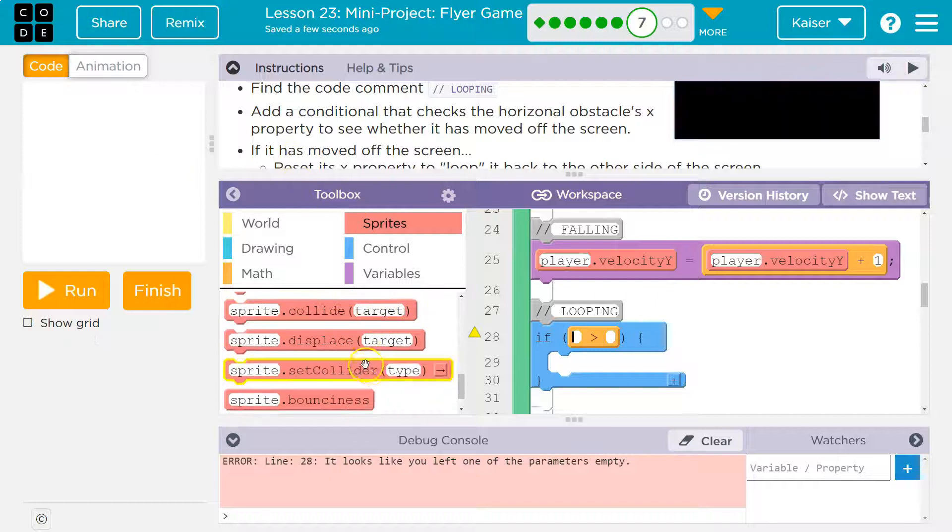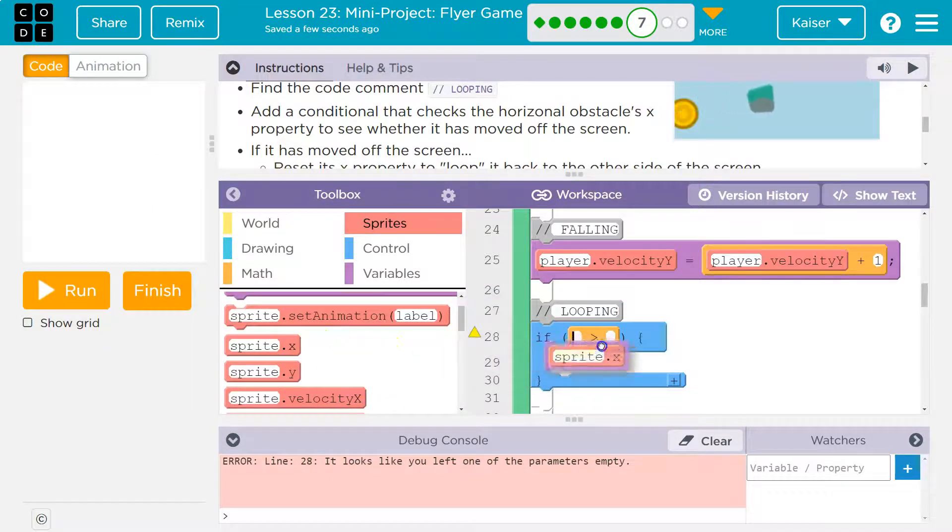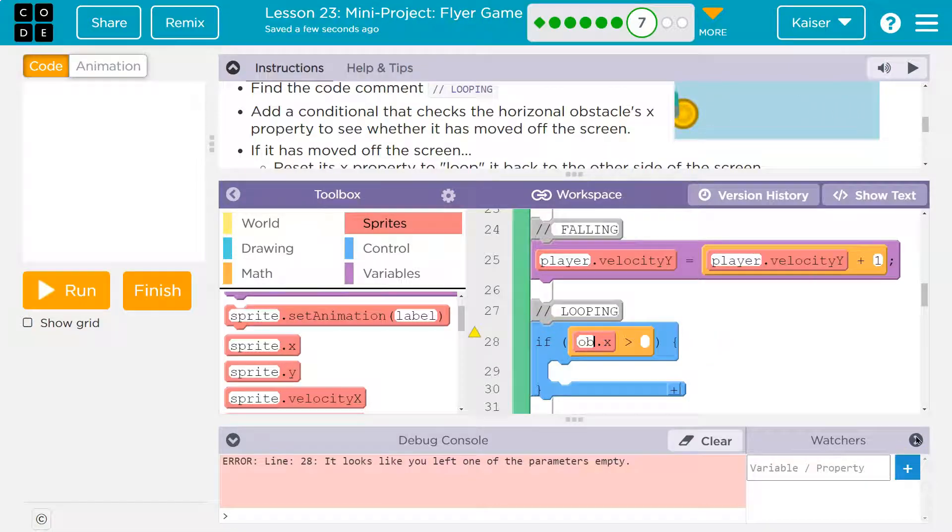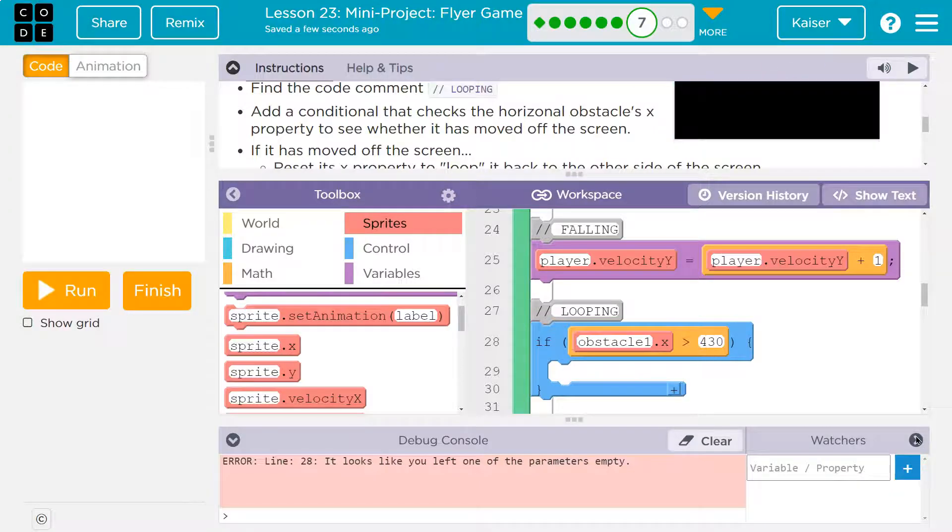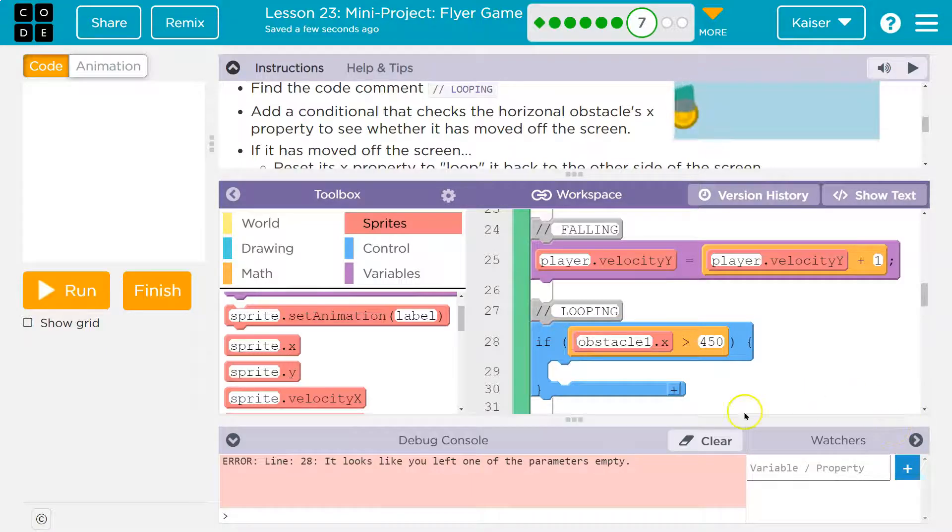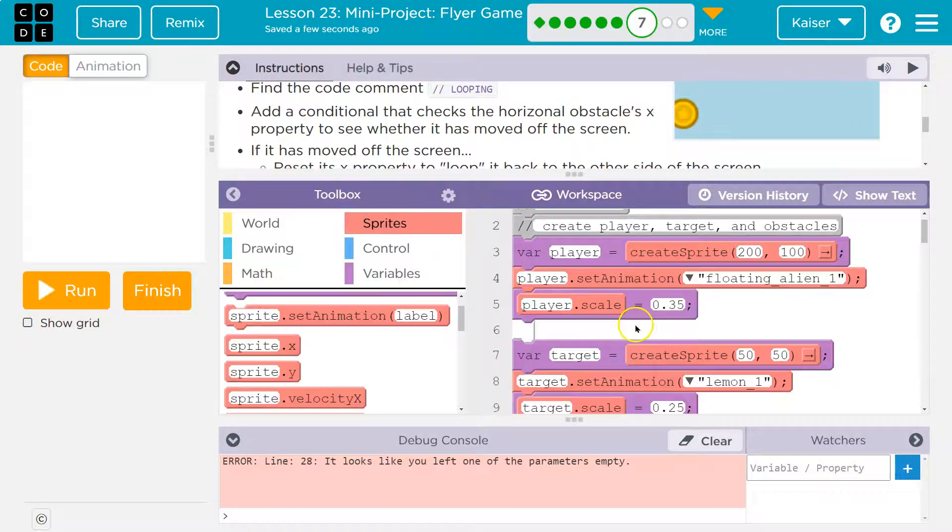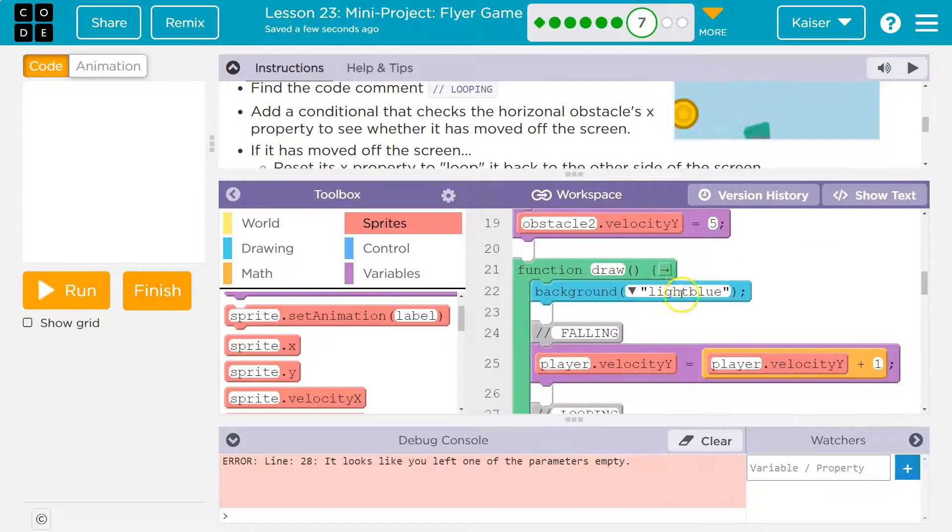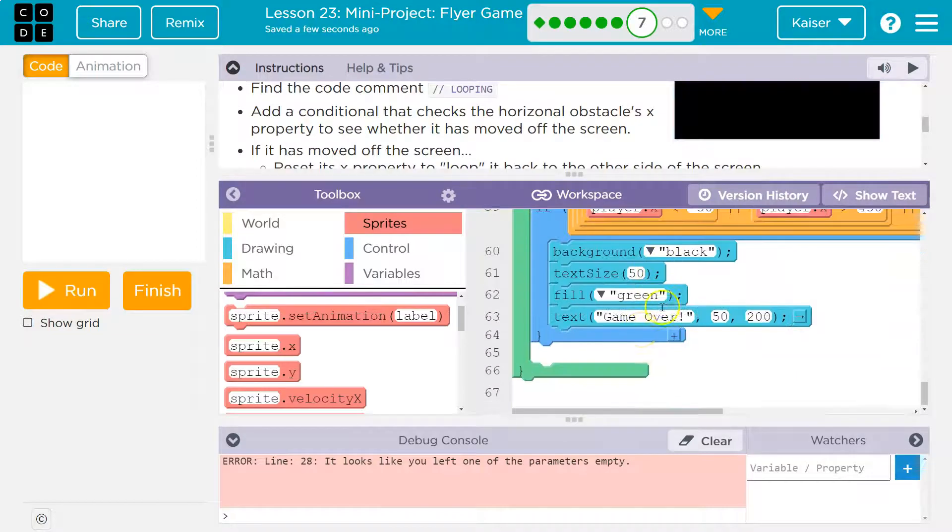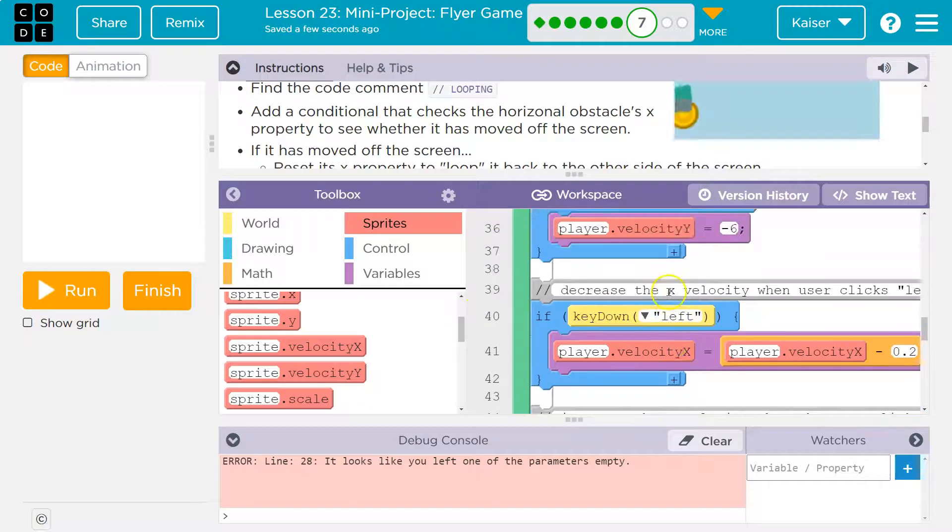Let's try this out. If obstacle one's x value is greater than 450—we just want to make sure it's off the screen—what do I want to do then? I don't need to change its speed because we set the velocity way up here, and that's like setting cruise control, so my speed will still be five. I don't need to change its speed; I need to change its location.